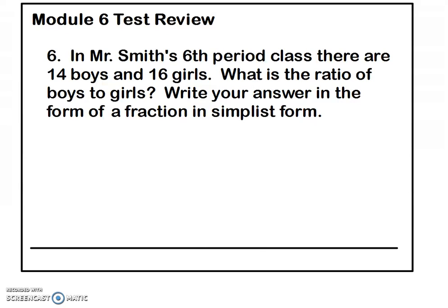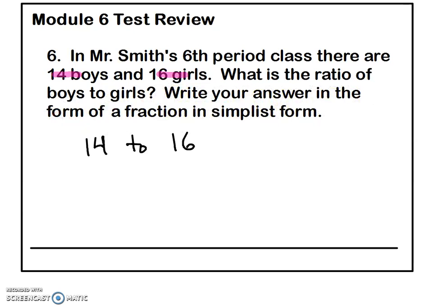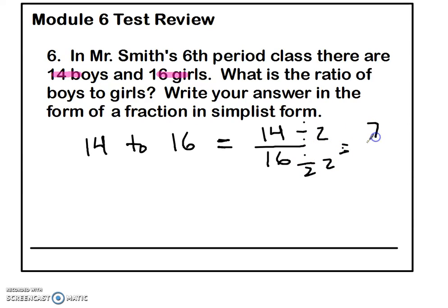Number six: in Mr. Smith's sixth period class, there are 14 boys and 16 girls. What is the ratio of boys to girls? Write your answer in the form of a fraction in simplest form. If you did not read that last sentence, you might write 14 to 16, which is reasonable but doesn't follow the full directions. The question asks you to write a ratio as a fraction in simplest form. So first identify it as 14 to 16, then rewrite it as a fraction, then simplify. 14 and 16 share a factor of 2: 14 divided by 2 is 7, and 16 divided by 2 is 8. The best answer is 7 to 8.